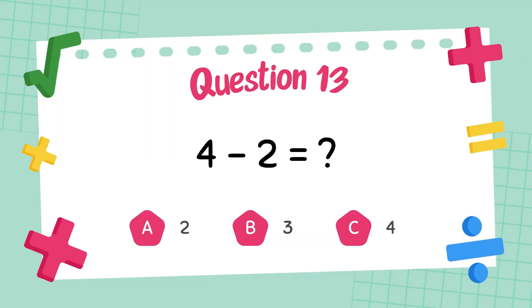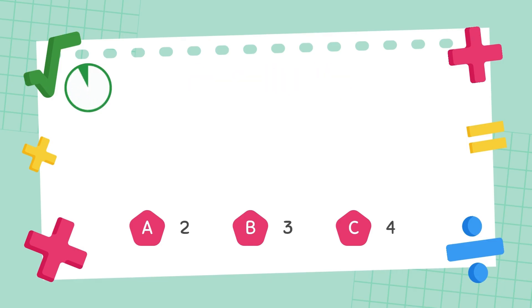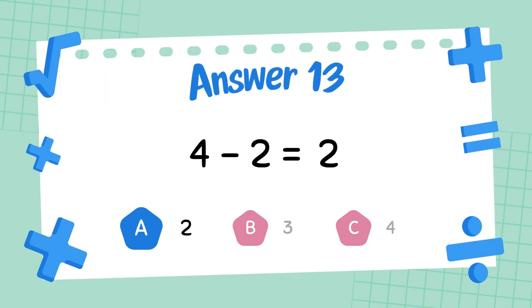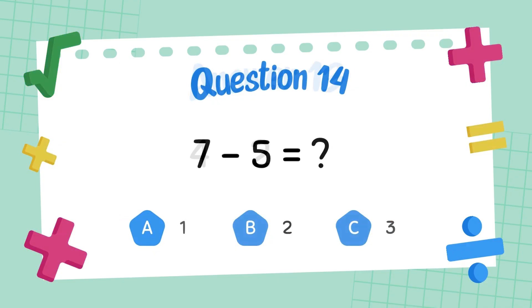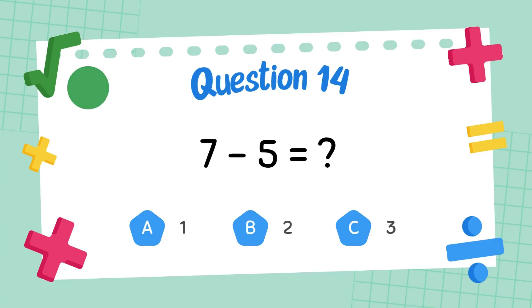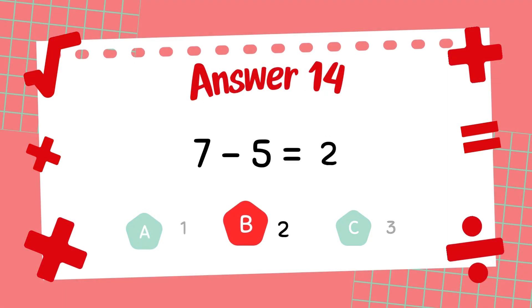What is 4 minus 2? The answer is 2. What is 7 minus 5? The answer is 2.